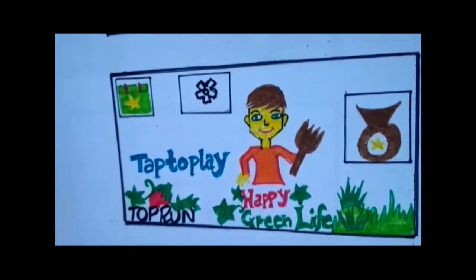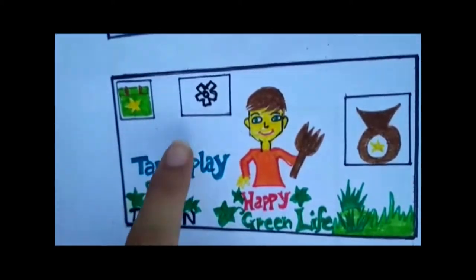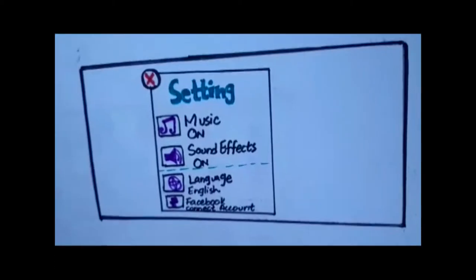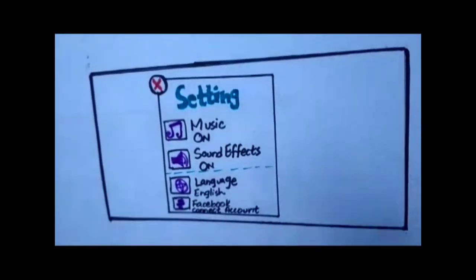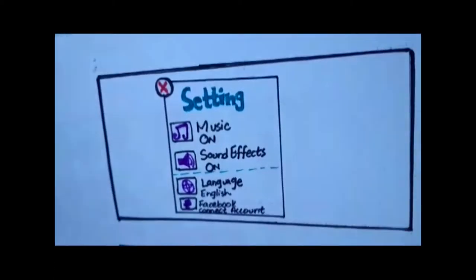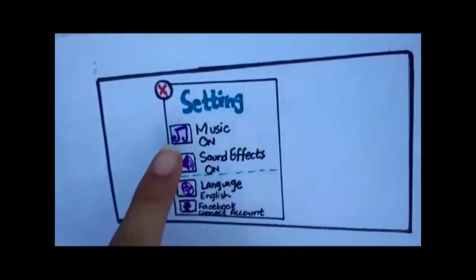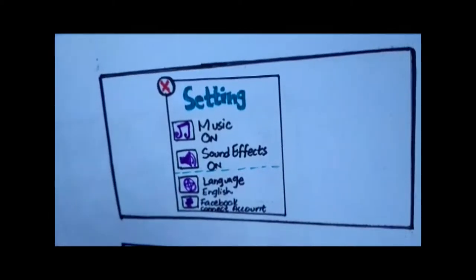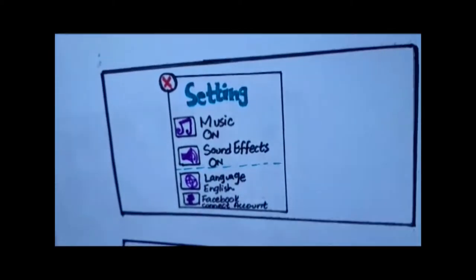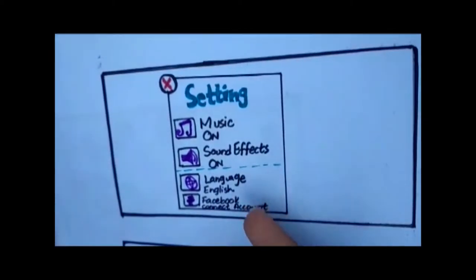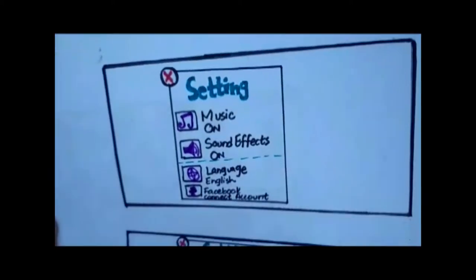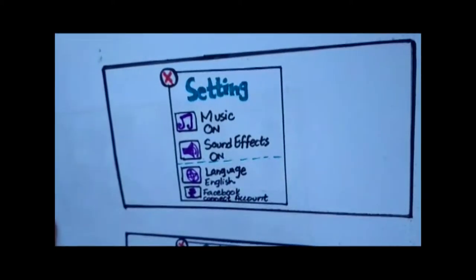In the second setting option, when you click on it, the next screen appears. There are a lot of options here. First, music or sound effects — you can turn it on or off. Language — you can select your specific language. Facebook — you can connect to your account.